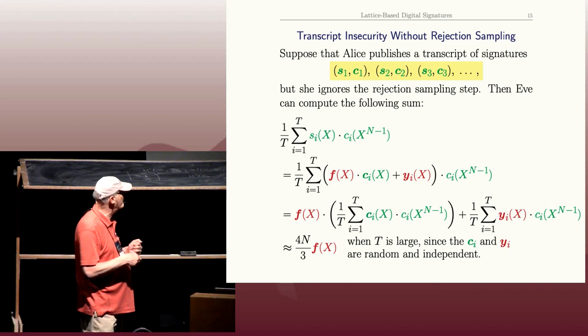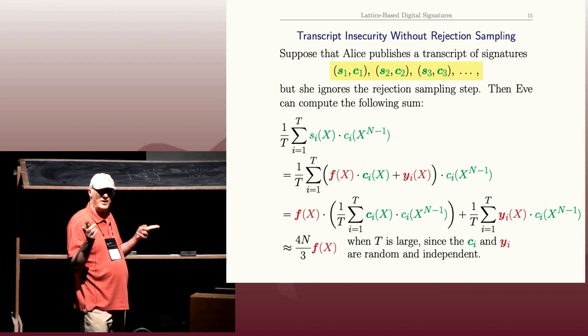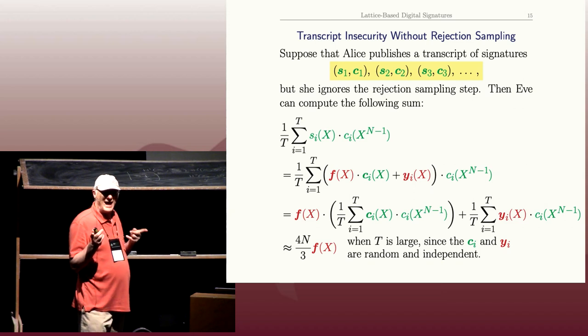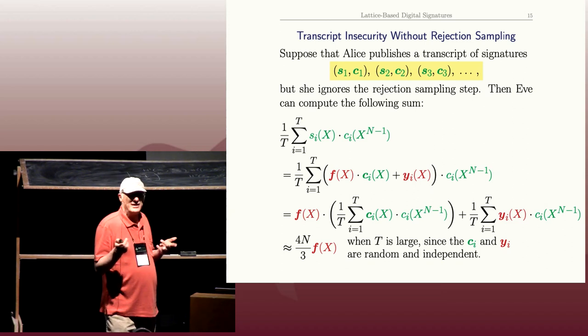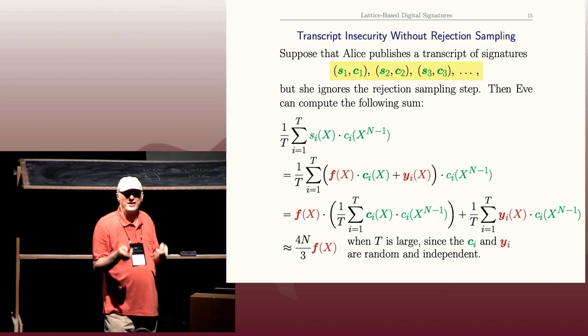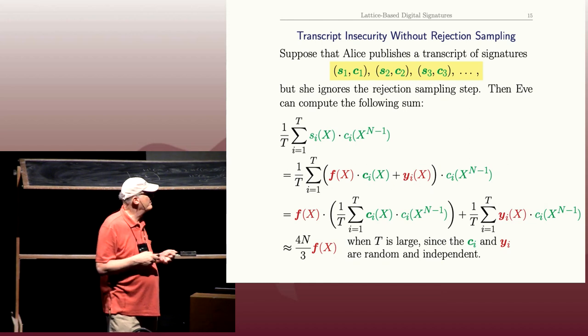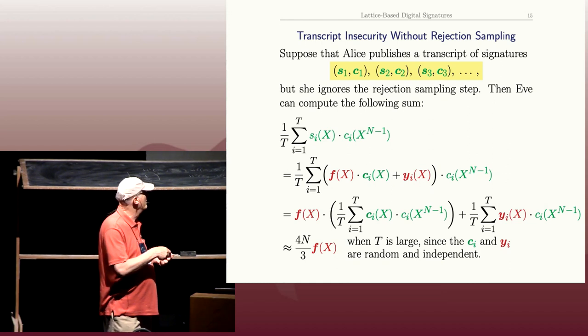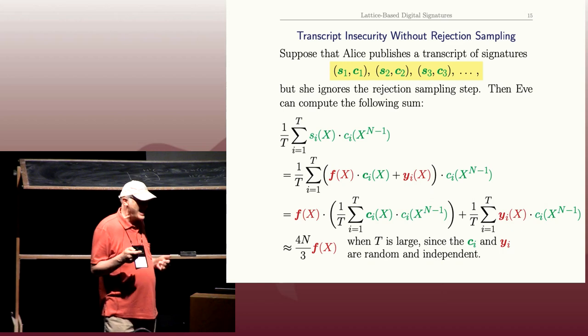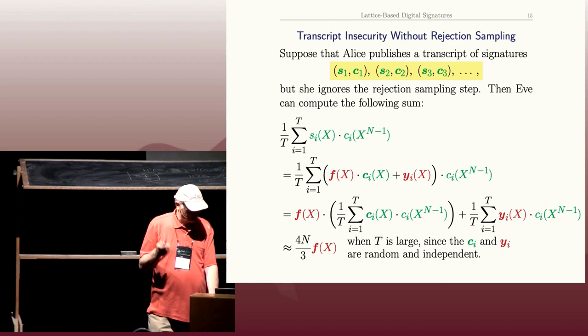Okay, and she'll get a polynomial with real coefficients. She runs the coefficients to nearest integer, because f, remember, has coefficients 0, 1, and minus 1. So if you know f to within the coefficients of f to within, say, a tenth, you know f, right? Because its coefficients are just 0s, 1s, and minus 1s. And that's how Eve would recover Alice's private key if Alice were careless and didn't do the rejection sampling step.